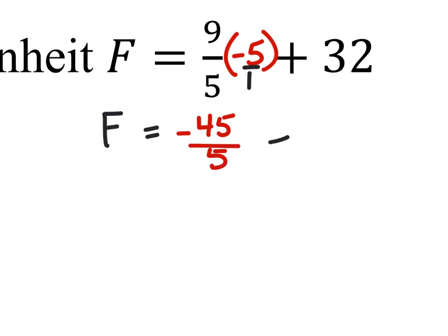And then we'll still add the 32. And negative 45 divided by five is negative nine plus 32.